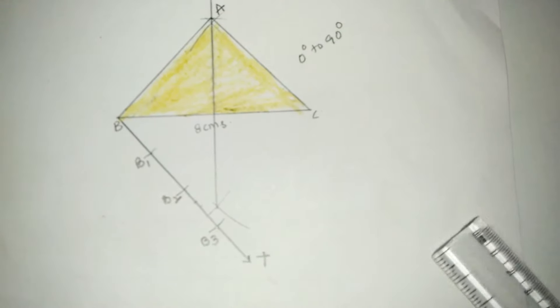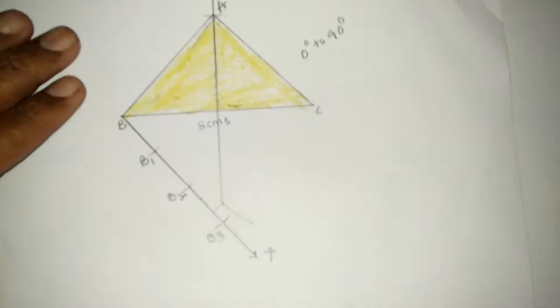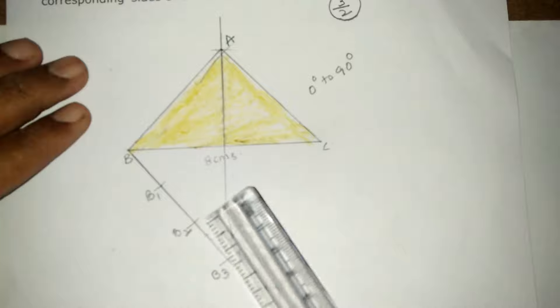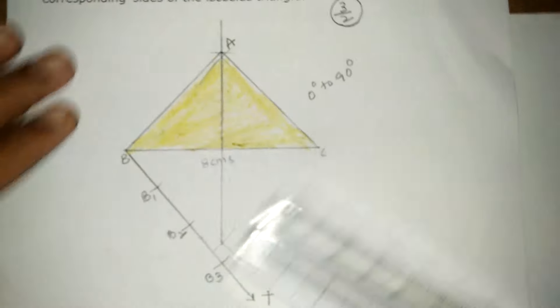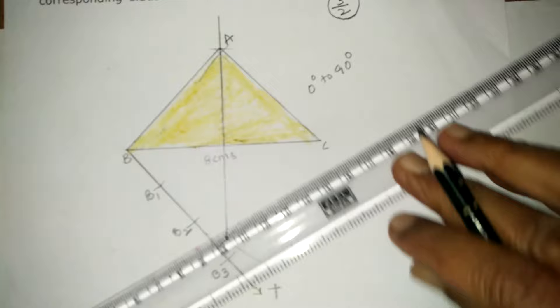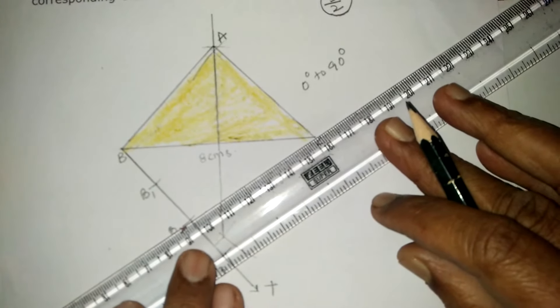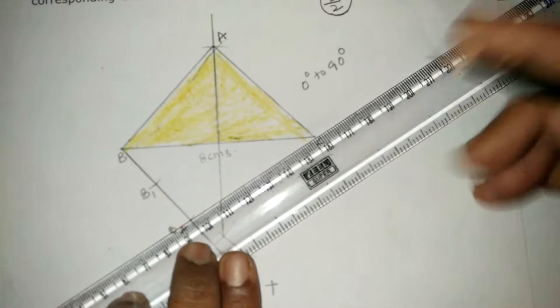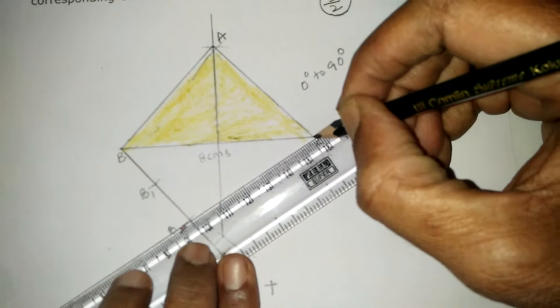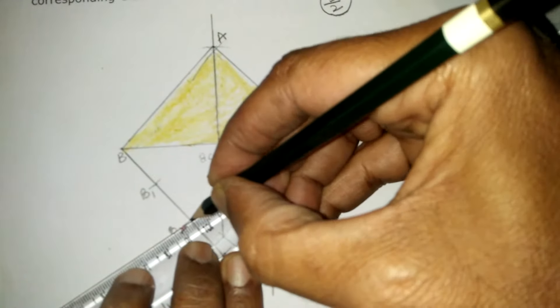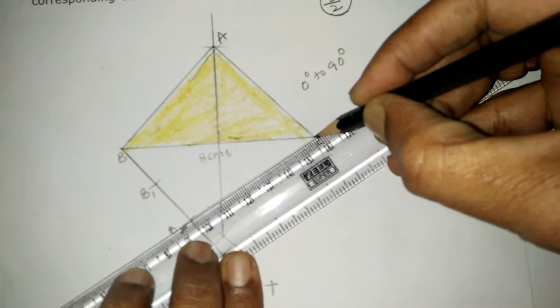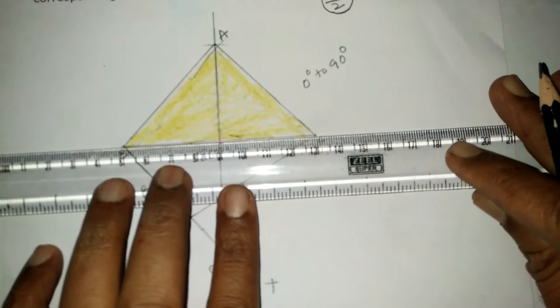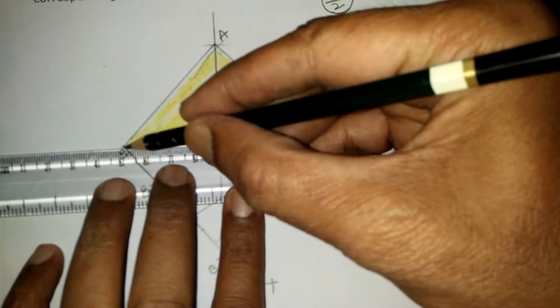Now, denominator is smaller than numerator. Hence, from B2 we will join B2 to C. Produce BC or extend the line segment BC.